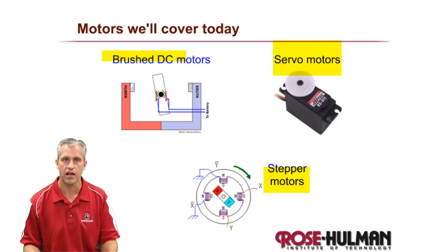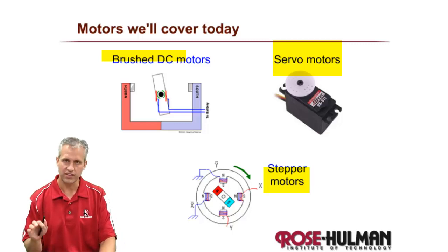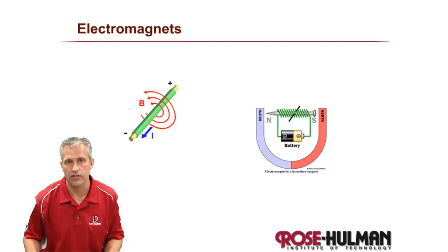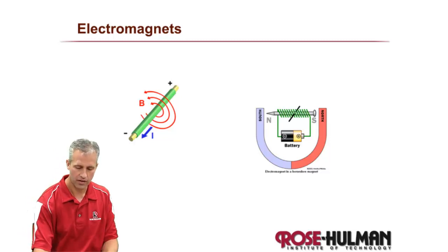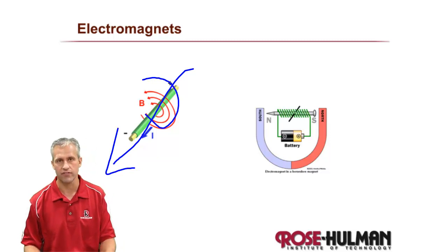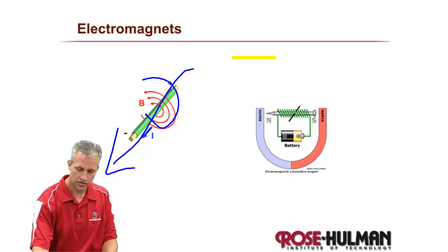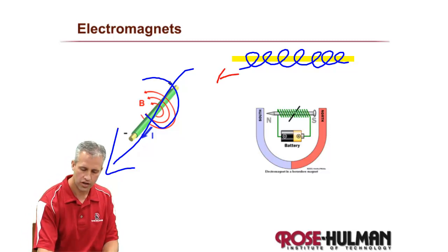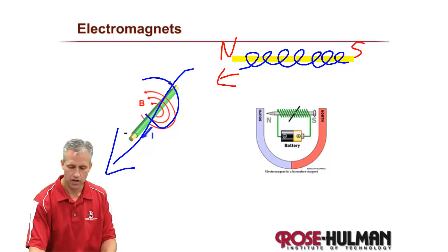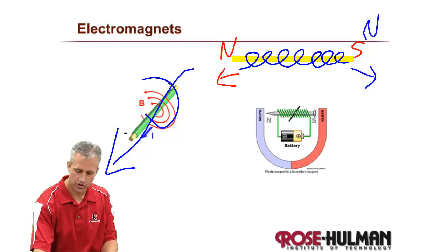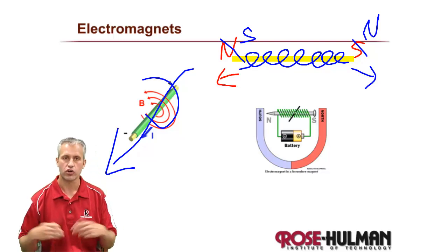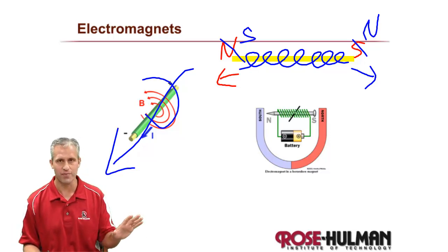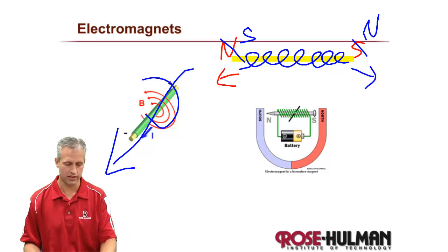This video is about DC motors — and whenever I say DC motors I mean brushed DC motors. The concept all of these are based on is electromagnets. If you have a wire with current flowing through it, you generate a magnetic field. Coil that wire around a piece of metal and you create a north and south pole. Reverse the current and you switch which side is north and south. That's the fundamental principle driving all the electric motors we'll discuss.